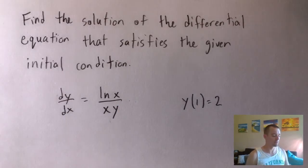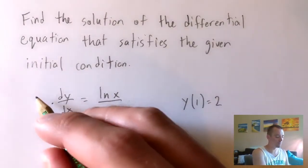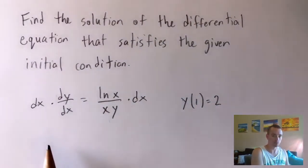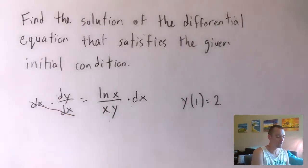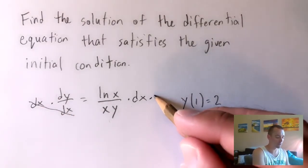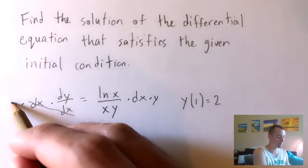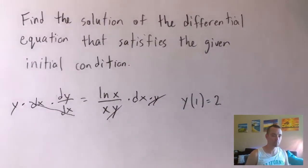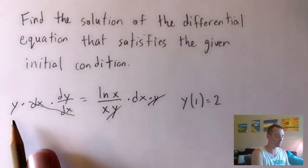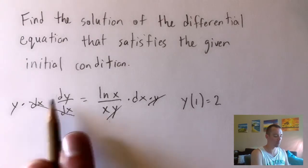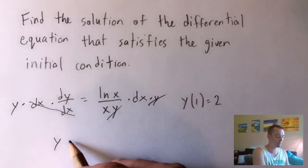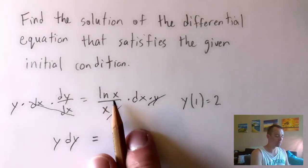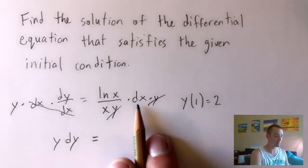That's actually fairly simple. All we have to do is multiply both sides of our equation by dx to cancel it on the left side, and then multiply both sides by y to cancel it on the right side. Doing that, we're left with y dy on the left side and natural log of x over x times dx on the right side.